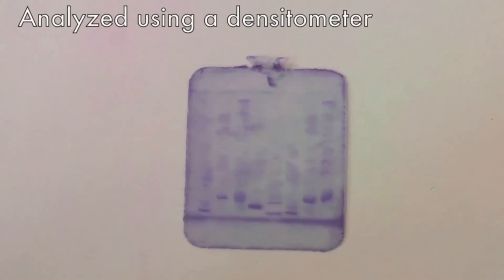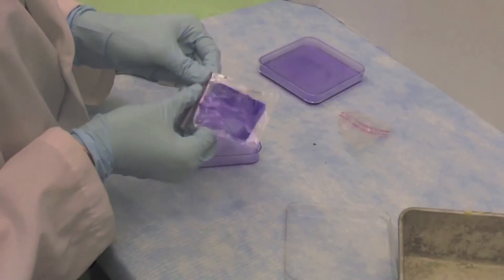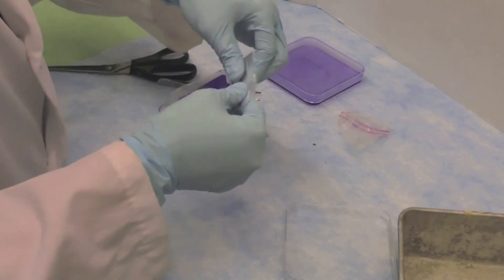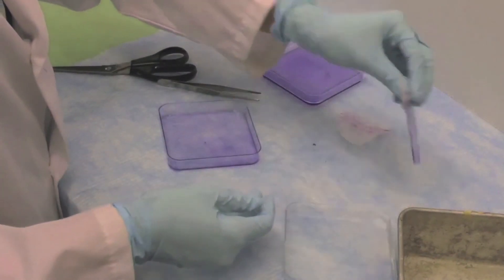When the gel has completed de-staining to a transparent background with distinct blue bands, scan the gel and analyze using the densitometer. The gel can be kept by replacing the plastic cover on the gel, then stored in a small ziplock bag.